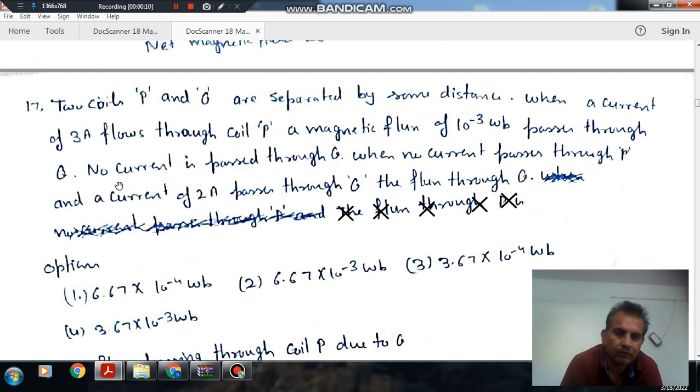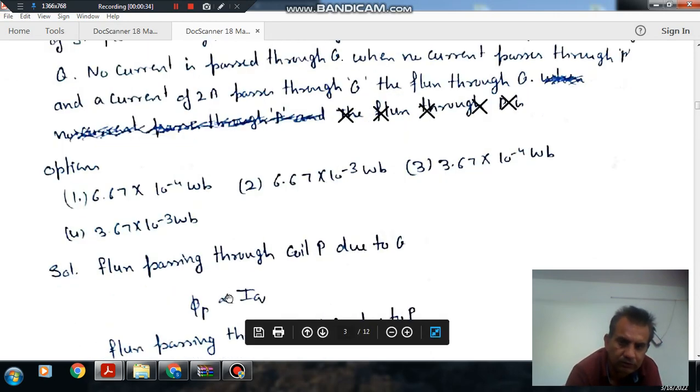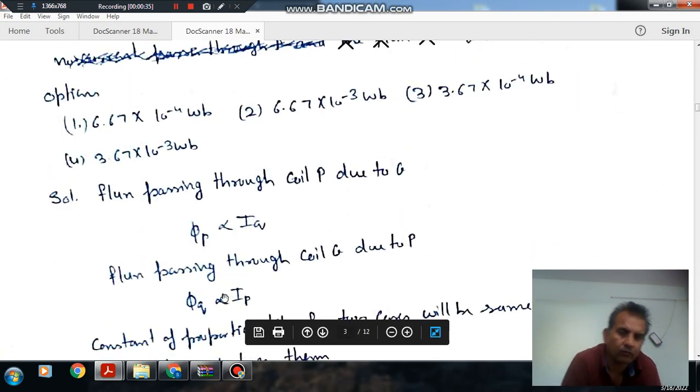Question number 17 from year 2019: Two coils P and Q are separated by some distance. When a current of 3 ampere flows through coil P, a magnetic flux of 10^-3 weber passes through Q. No current is passed through Q.